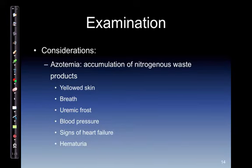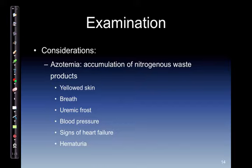On examination: azotemia is the accumulation of nitrogenous waste products, giving us several signs — yellowed skin caused by keratins in the skin, a condition called keratodermia; breath with ammonia and other aromatics off-gassing in exhaled air, causing foul, fishy odor; uremic frost, which is small droplets of urine collected on the face and facial hair around the mouth. Without diuresis, blood volume begins to increase, stretching the cardiovascular system, leading to signs of heart failure, pulmonary edema, jugular venous distension, hepatic-jugular reflex, abdominal distension with tenderness, peripheral edema, and hematuria due to hematological disorders secondary to kidney failure.